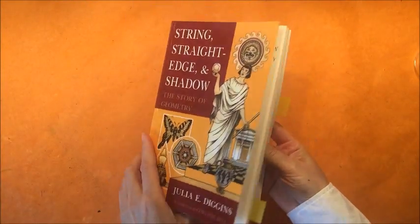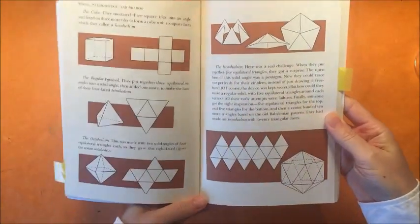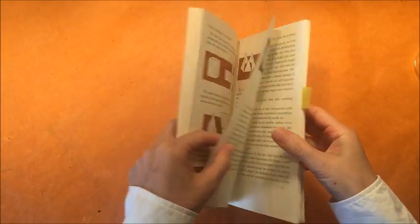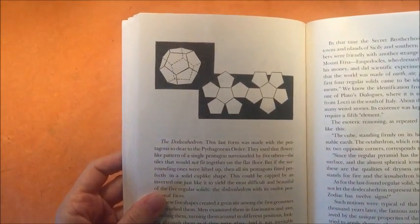We're reading this book called String, Straight Edge, and Shadow, and this is a chapter that talks about how these shapes were discovered. This is back in about 6th century BC and it was by Pythagoras and his secret brotherhood.